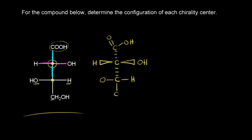Going back to our chiral center — to assign a configuration, we look at the atoms directly bonded to that carbon. There's a hydrogen, an oxygen, and two carbons. Oxygen has the highest atomic number, so the OH group gets the highest priority — number one. The hydrogen has the lowest atomic number, so that's lowest priority — number four. Next we have carbon versus carbon, and carbon has the same atomic number, so we need to break the tie.